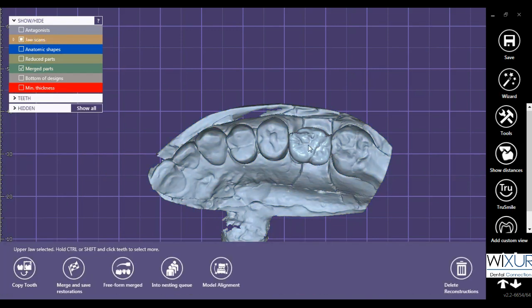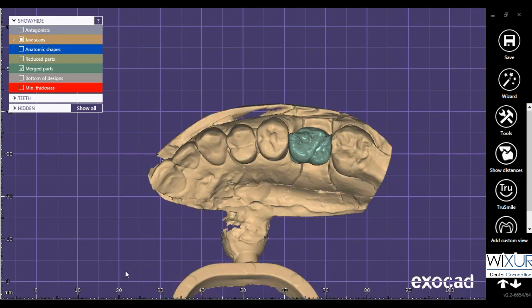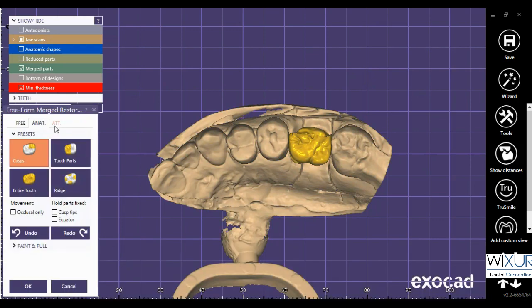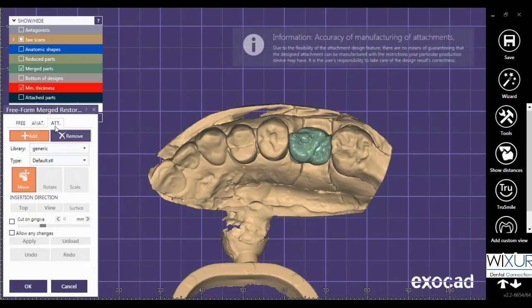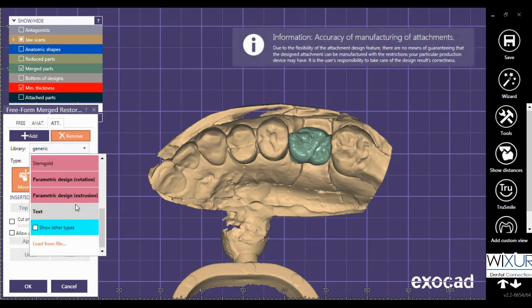Then select 'Free for Merged'. Click on the Attachment tab, select Remove, and in the library select Parametric Design.